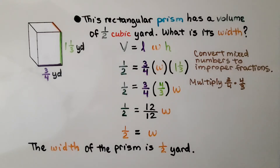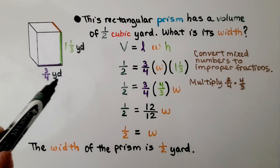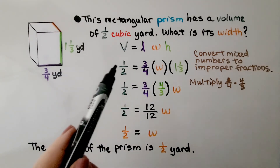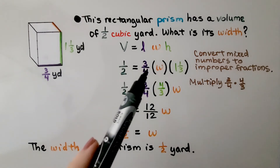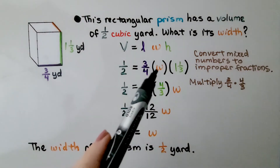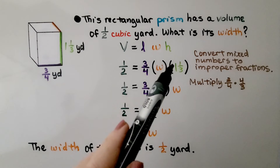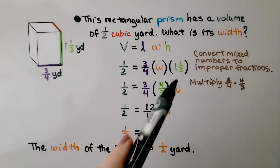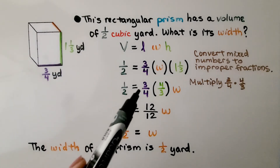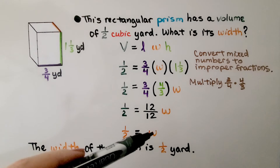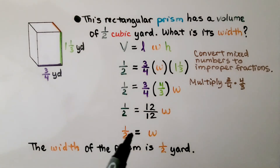This rectangular prism has a volume of 1/2 cubic yard. What is its width? The length is 3/4 yard and the height is 1 and 1/3 yard. We substitute into the formula: 1/2 = 3/4 × w × 1⅓. We convert 1⅓ to the improper fraction 4/3. Then we multiply 3/4 times 4/3 and get 12/12, which equals 1, giving us 1w. So 1/2 equals the width — the width of the prism is 1/2 yard.